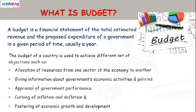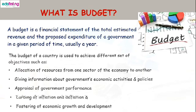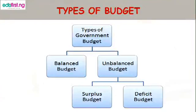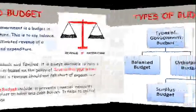Three, appraisal of government performance; four, coping with inflation and deflation; and lastly, fostering economic growth and development. Now, types of government budget: we have balanced budget and unbalanced budget. Under unbalanced budget we have surplus budget and deficit budget.